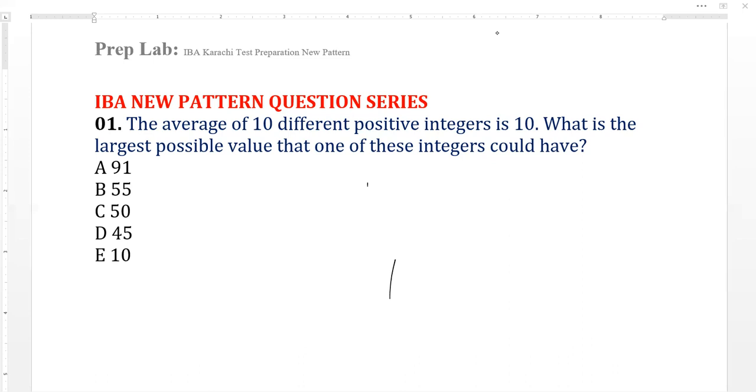Okay, so the average of ten different positive integers. Here ten different, everything's counted - ten different positive integers. So we know that positive integers where zero is not included: one, two, three, four, five, right? Zero is a neutral number and negative integers are minus one, two, three, four.